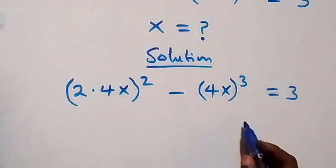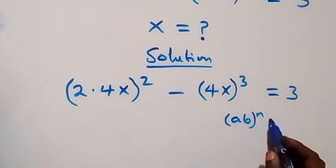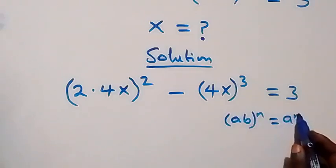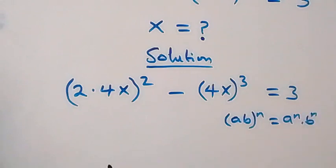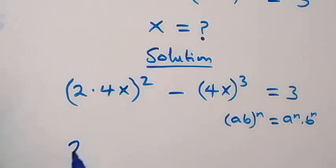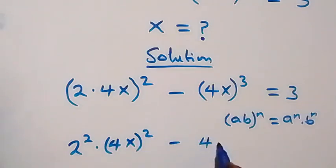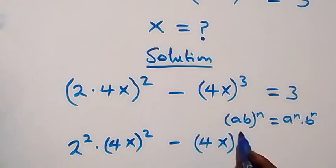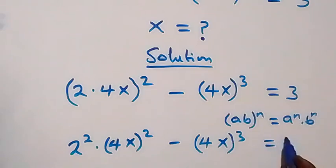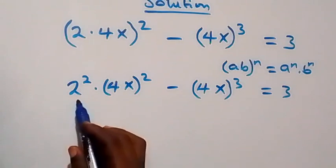From the law of indices, a times b raised to power n is the same as a raised to power n times b raised to power n. Let's use this with the power of 2 to expand, giving us 2 squared times (4x) squared, then minus we leave (4x) all raised to power 3, equals 3.